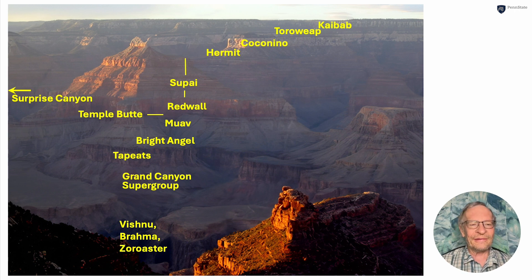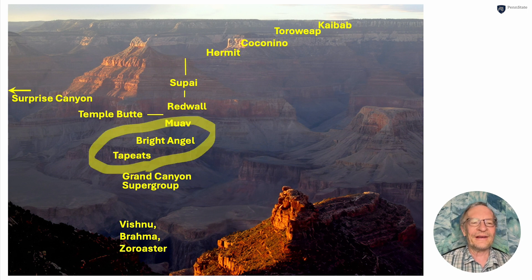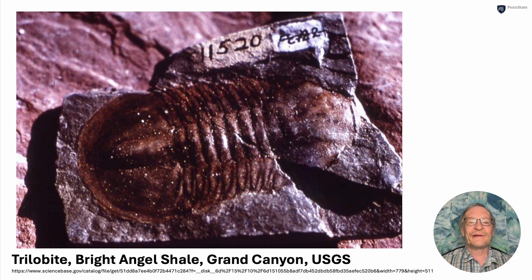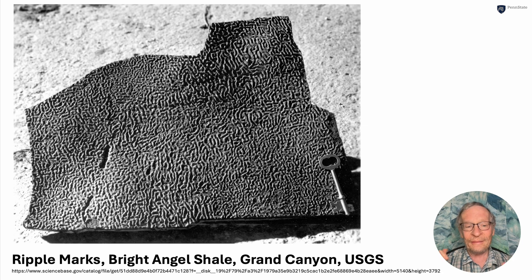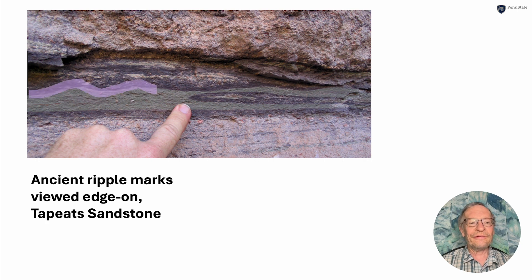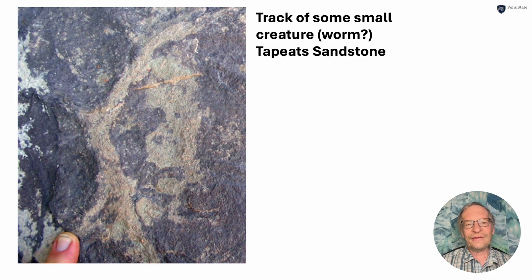Now we've worked up through the Vishnu, Brahma, Zoroaster, and the Grand Canyon Supergroup. We're going to go up and look at these layers: the Tonto Plateau, the Tapetes, the Bright Angel, and the Muav. You can find a trilobite fossil in the Bright Angel. When water flows it often makes ripples — and these are old ripples in the Bright Angel shale. Here's a picture of ripples viewed edge-on in the Tapetes sandstone, and another looking down on a layer in the Tapetes where a worm crawled through and left a track.